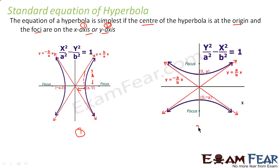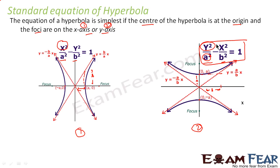In case two, when the foci are on the y-axis, the equation is y²/a² − x²/b² = 1. Notice that in case one, x² comes first; in case two, y² comes first. In both cases, a² always precedes b². The key is: since a lies along the x-axis in case one, we write x²/a²; since a lies along the y-axis in case two, we write y²/a².